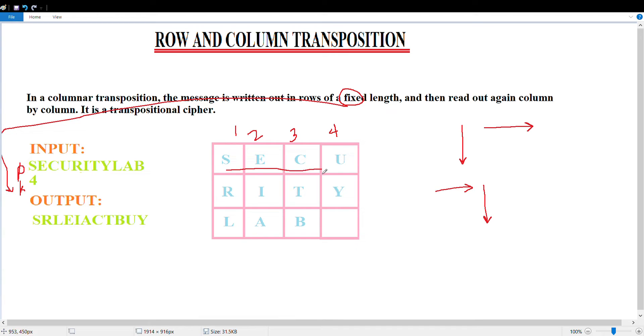lab. When we read it out, we read it column-wise as: S R L E I A C T B U Y. This is how we read it for encryption.